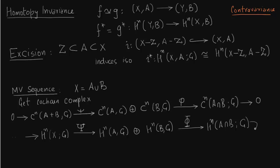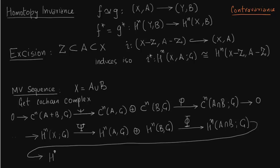We have cohomology of A intersection D comma G. Now we increase the index by 1, and we continue.